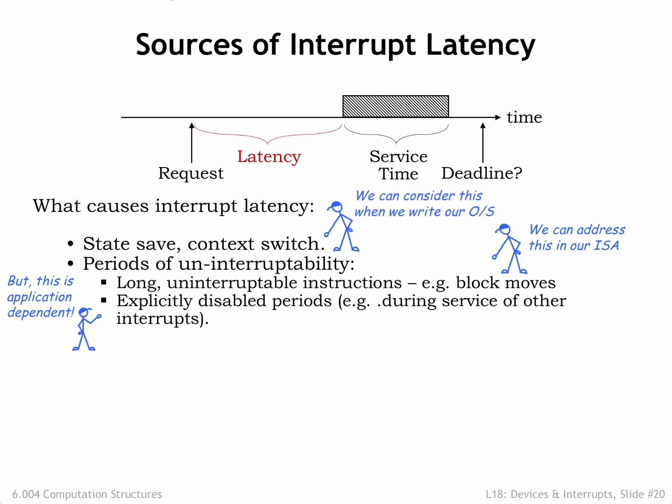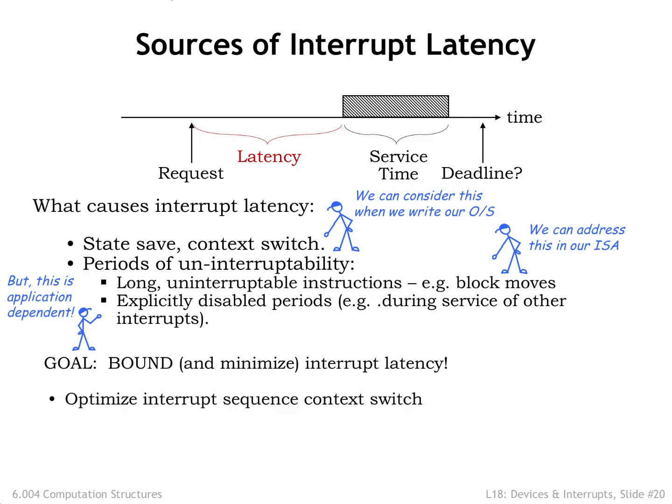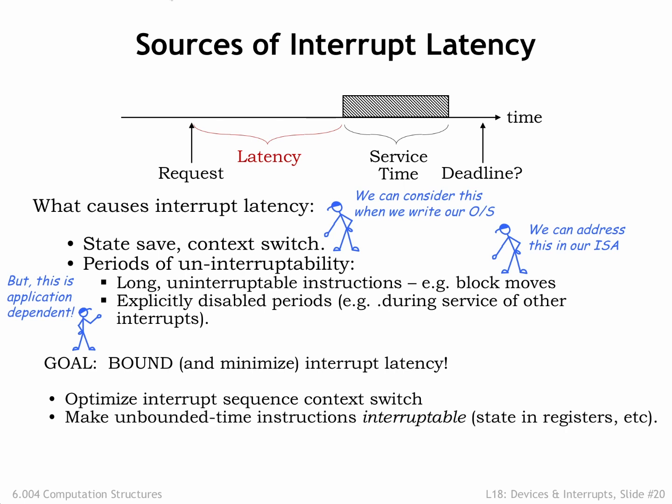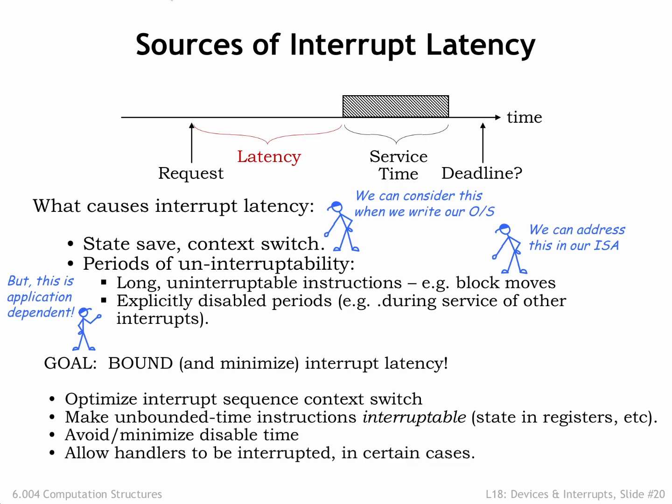Writing programs with hard real-time constraints can get complicated. Our goal is to bound and minimize interrupt latency. We'll do this by optimizing the cost of taking an interrupt and dispatching to the correct handler code. We'll avoid instructions whose execution time is data-dependent, and we'll work to minimize the time spent in kernel mode. But even with all these measures, in some cases we'll have to modify our system to allow interrupts even in kernel mode. Next, we'll look at some concrete examples and see what mechanisms are required to make guarantees about hard real-time constraints.